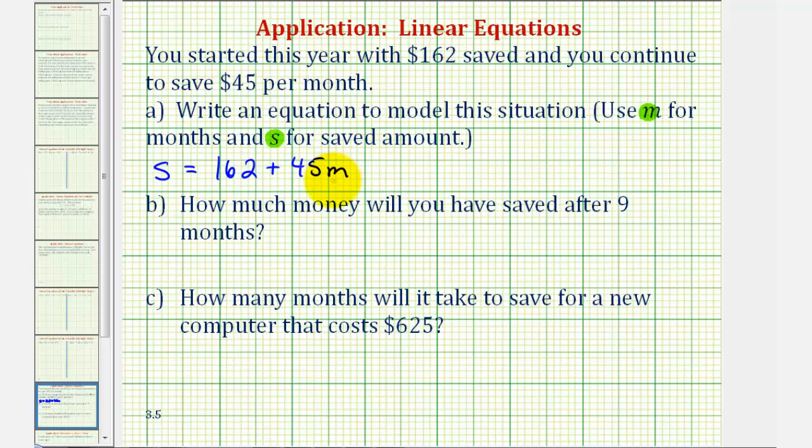Notice each time M increases by one, you'd add another $45 to the saved amount. Now because we're also studying linear equations in slope-intercept form, we could also change the order of these two terms and write S equals 45M plus 162. Both of these equations are correct and equivalent, they're just in a slightly different form.